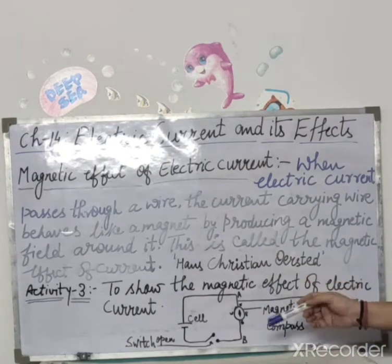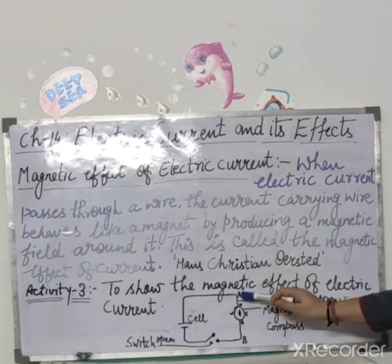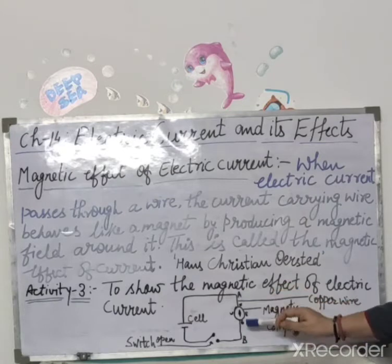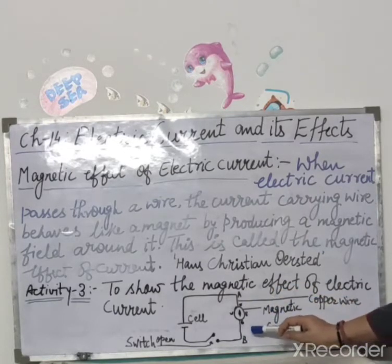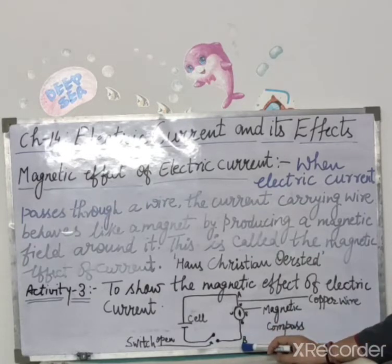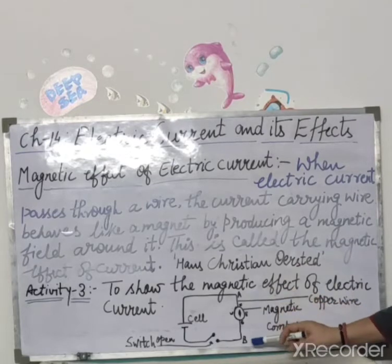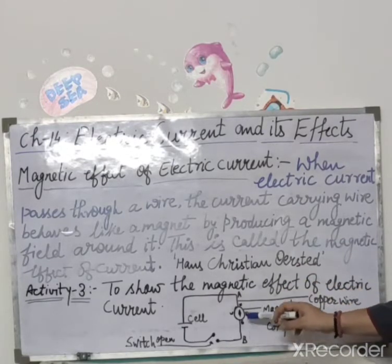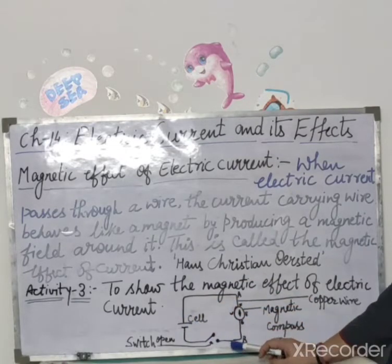Ab hum log kya karenge? Connect a thick insulated copper wire A to B — yeh aap log dekh pa rahe hain, yeh A aur B, maine bana diya hai, aur yeh copper wire hai — to a cell through a switch by using connecting wires, such that the copper wire AB is in the north-south direction. Is tarike se leenge aur isko cell ke saath aur switch ke saath is tarike se connect kar denge.